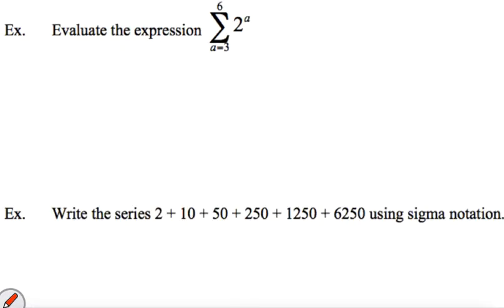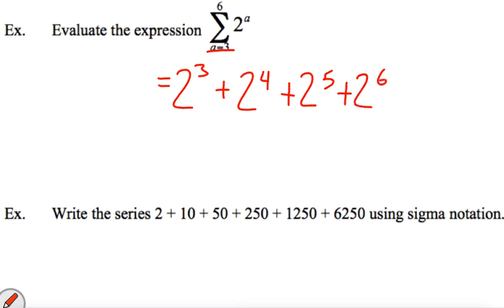The next one is a little different because it doesn't start at 1. We've got 2 to the 3, plus 2 to the 4, plus 2 to the 5, plus 2 to the 6, which equals 120.